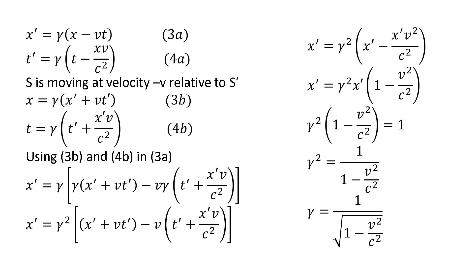Substituting B equals minus V/C², we get the equations: X prime equals gamma·(X minus V·T) and T prime equals gamma·(T minus X·V/C²). These are called equations 3a and 4a. For the reverse transformations, since S is moving at velocity minus V relative to S prime, we exchange X and X prime, exchange T and T prime, and replace V with negative V in equations 3a and 4a. This gives X equals gamma·(X prime + V·T prime) and T equals gamma·(T prime + X prime·V/C²), called equations 3b and 4b.